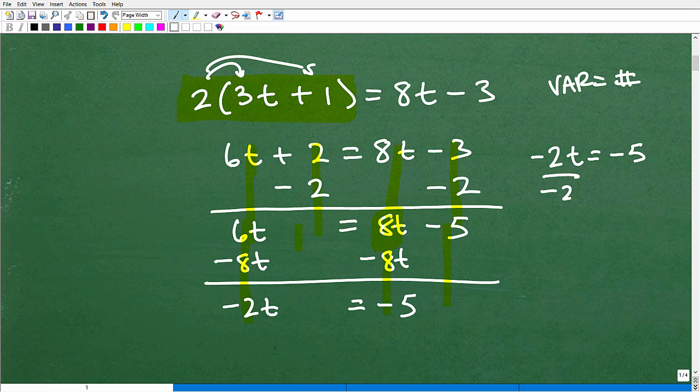So I get t is equal to negative 5 divided by negative 2. Negative divided by negative is positive. 5 halves. All right, so if you got this right,